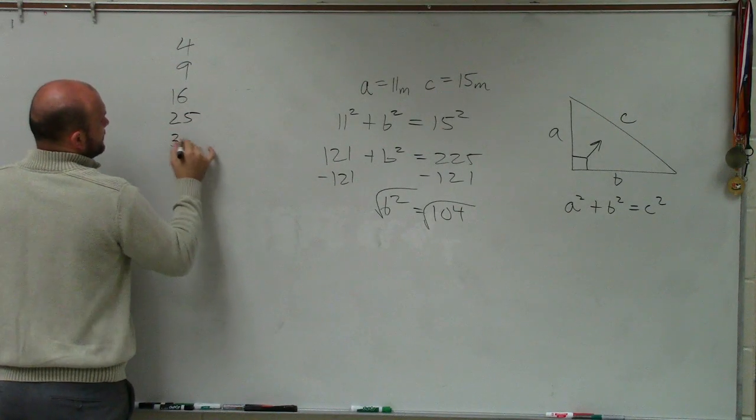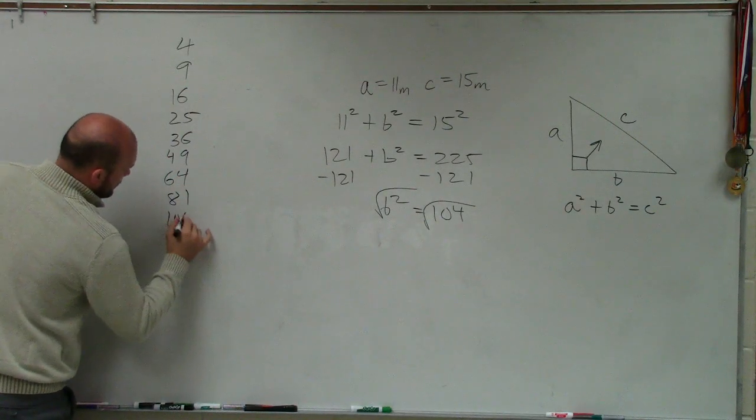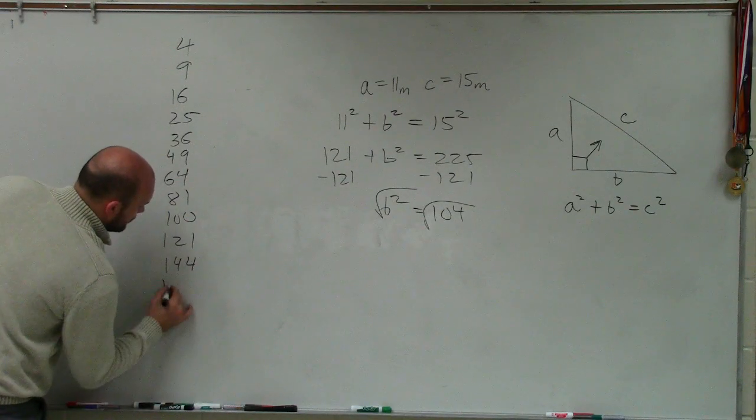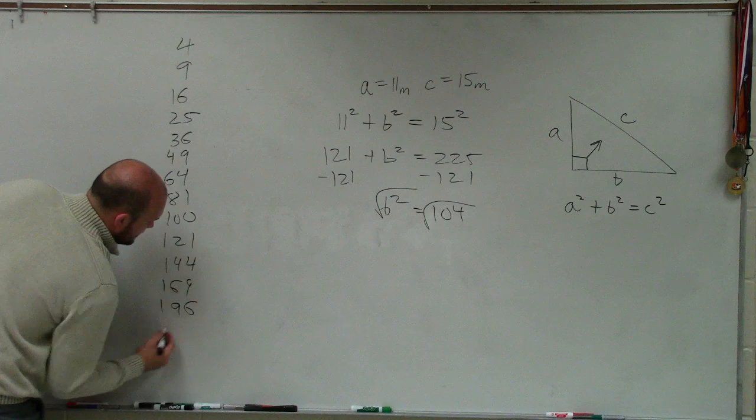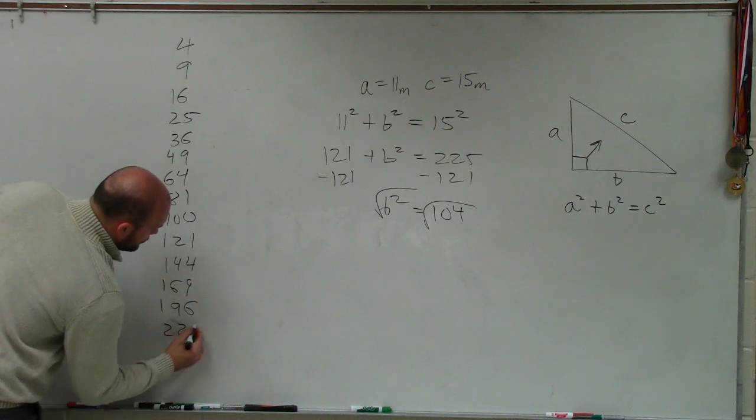And now we need to take the square root of 104. But they said leave it in radical form, meaning I don't want you to take your calculator and just take the square root of 104 and give me the answer. I want to leave it in simplest form. So in simplest form, what we need to do is write down all the square numbers that we know. 4, 9, 16, 25, 36, 49, 64, 81, 100, 121, 144, 169, 196, 225.